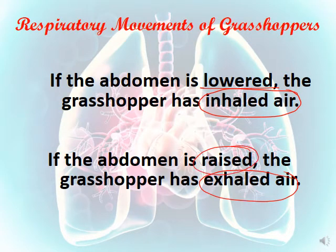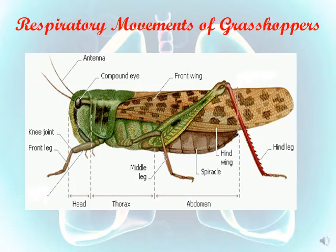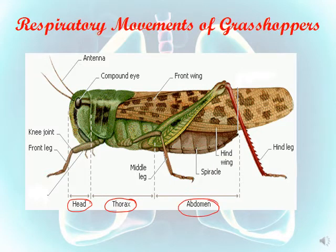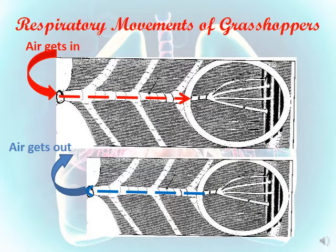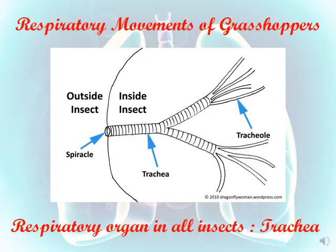The body of the grasshopper is divided into three parts: the head, the thorax, and the abdomen. Pay attention — we have an important part in the abdomen called the spiracles, which have an important role in breathing. Air gets in through the spiracles and goes out through the same spiracles. The air will enter through the spiracles and move through the trachea, which is the respiratory organ in all insects.